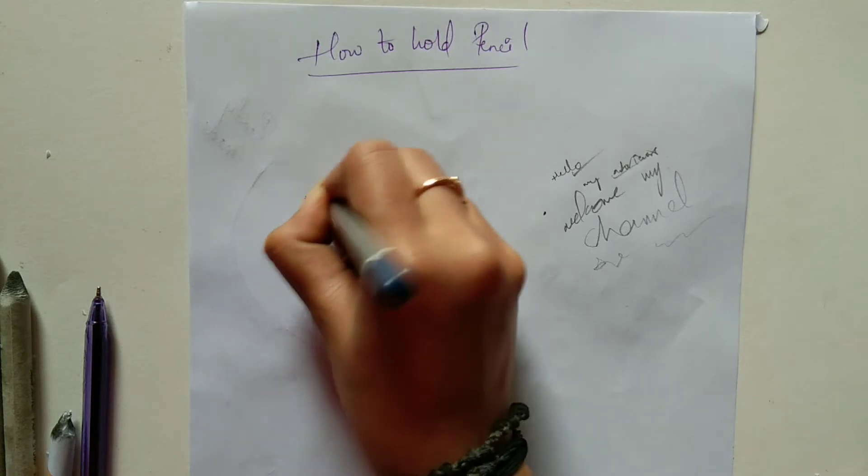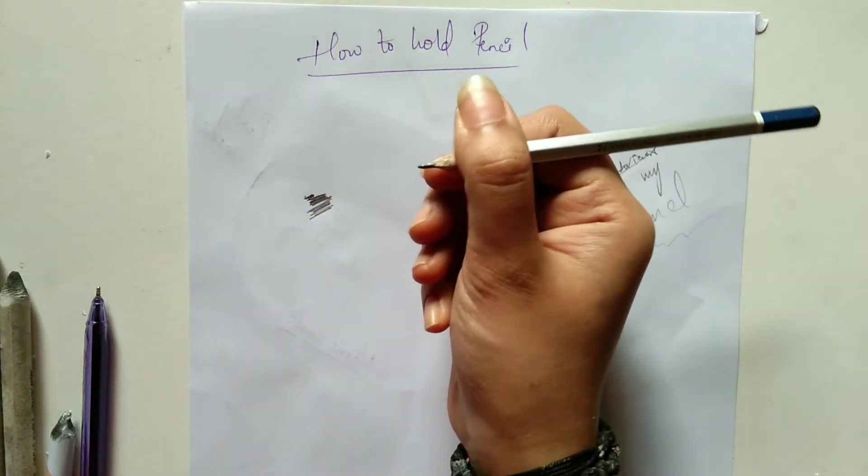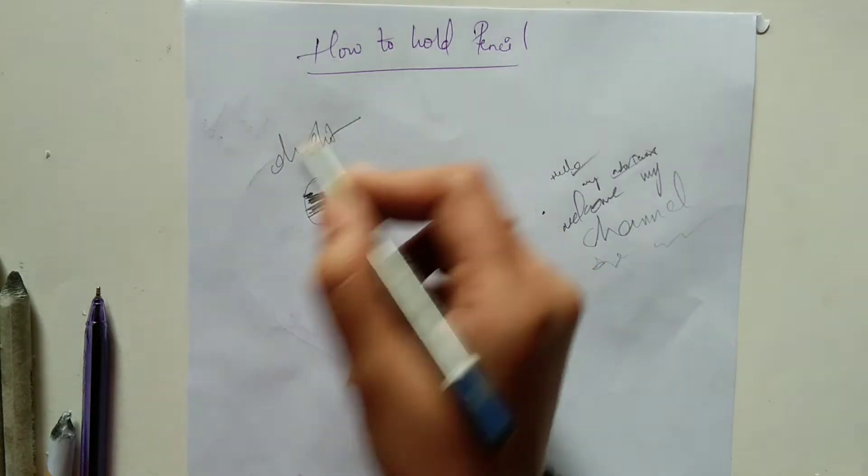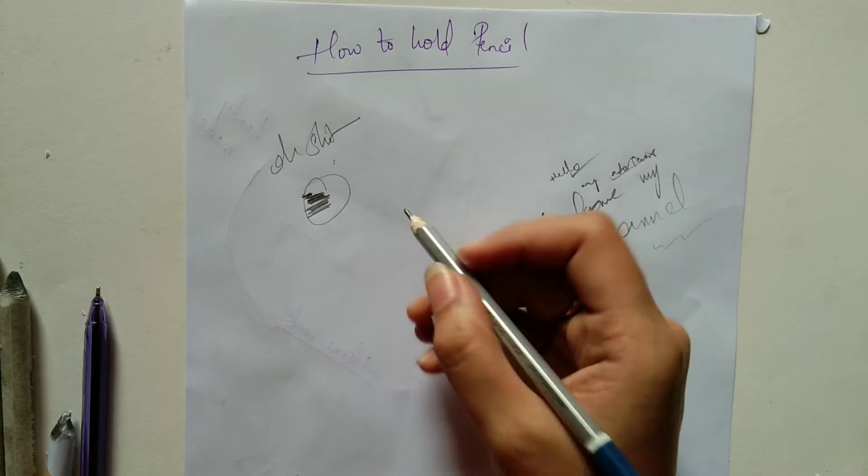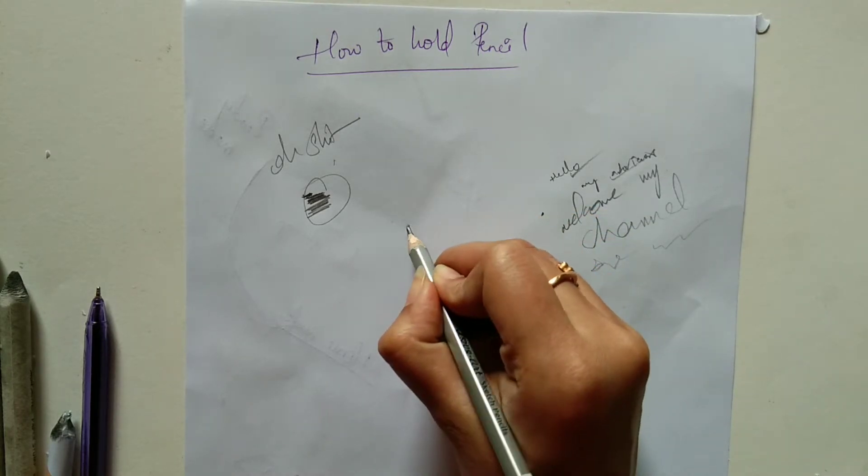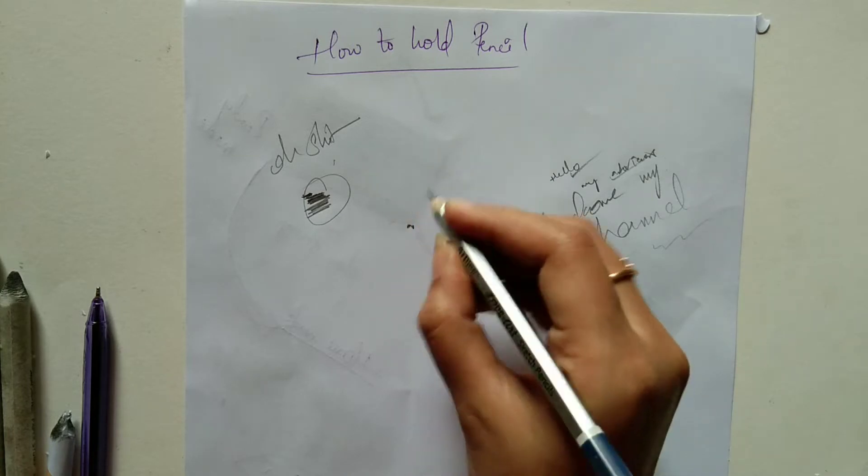This will be our first one. The people who are holding in this way can't see what they are doing below and they cannot achieve proper strokes. The second thing: people who are holding in this way will unknowingly put more pressure on lead.